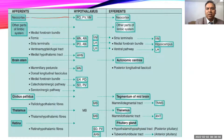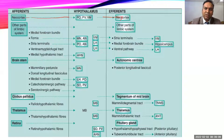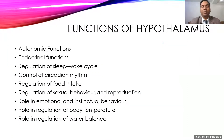From this, you can understand the different connections — the hypothalamus receives from the neocortex and sends back to it, the limbic system has vast connections, and the brainstem and autonomic system are also interconnected. The most important part of this topic is the functions of the hypothalamus, which can be divided into: autonomic functions, endocrine functions, maintenance of the sleep-wake cycle and circadian rhythm, regulation of food intake, sexual behavior and reproduction, emotional and instinctual behavior, regulation of body temperature, and regulation of water balance.